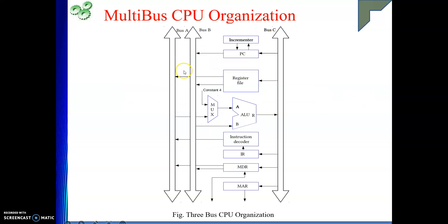In multi-bus CPU organization, there will be more than one bus. Previously we had only a single bus — only over a single set of wires we connected the small components belonging to the CPU. Whenever more than one bus is there to connect the components of CPU, we call it a multi-bus CPU organization.